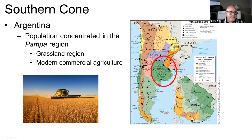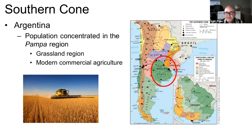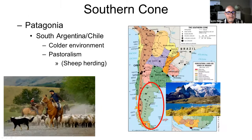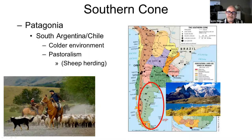Moving into the Southern Cone, let's highlight a couple of countries. Argentina's population is mostly concentrated in the Pampa — a subtropical grassland zone with modern commercial agriculture that would look familiar compared to California, as opposed to subsistence farming. Large-scale commercial farming dominates. Further south, conditions become harsher — closer to Antarctica, more remote and mountainous — with fewer people, a colder environment, and economic activity focused on pastoralism like sheep herding.